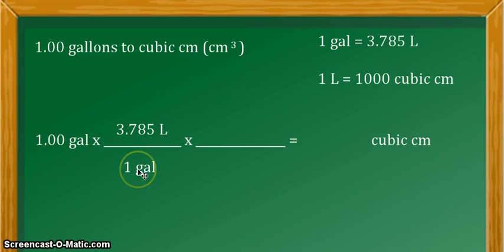We have here 1 gallon is equal to 3.785 liters as what we have written here in equivalent statement, and we have written it now in our conversion factor form. Again, never forget to take note of your units for it to cancel out. The given unit is in gallons, so the gallon unit in your conversion factor should be in the denominator for it to cancel out.